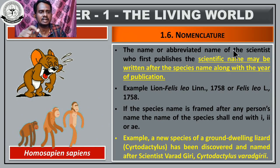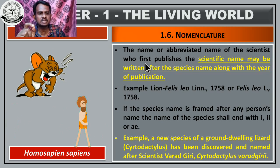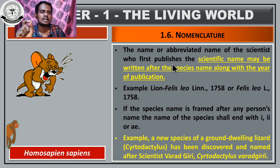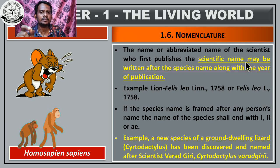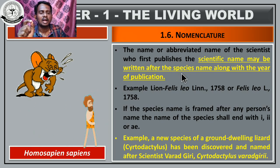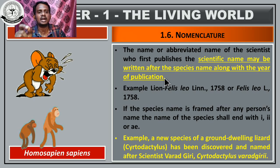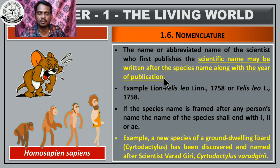Another rule: the abbreviated name of the scientist who published the scientific name may be written after the species name along with the year of publication.